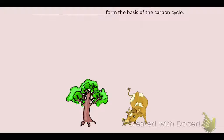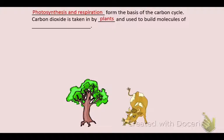Photosynthesis and respiration form the basis of the carbon cycle. We already know carbon dioxide is taken in by plants and is used to build molecules of glucose. Remember we kept drawing our tree that would take in the carbon dioxide and the water — it made an apple that was glucose.